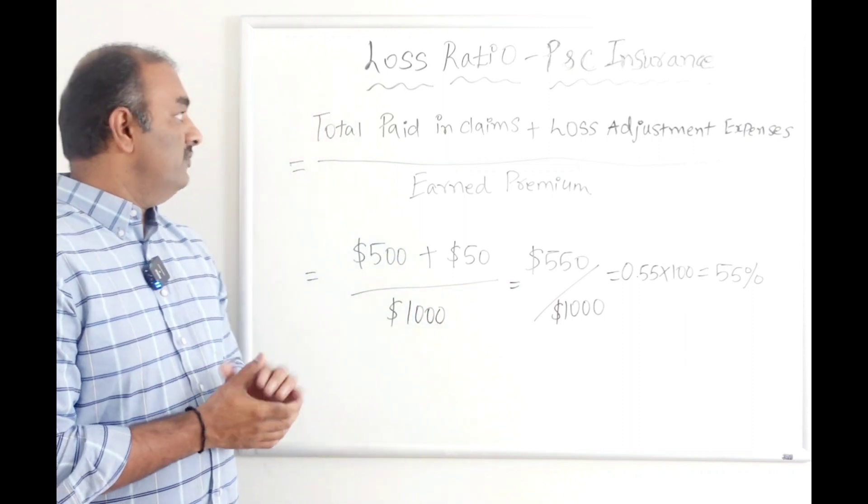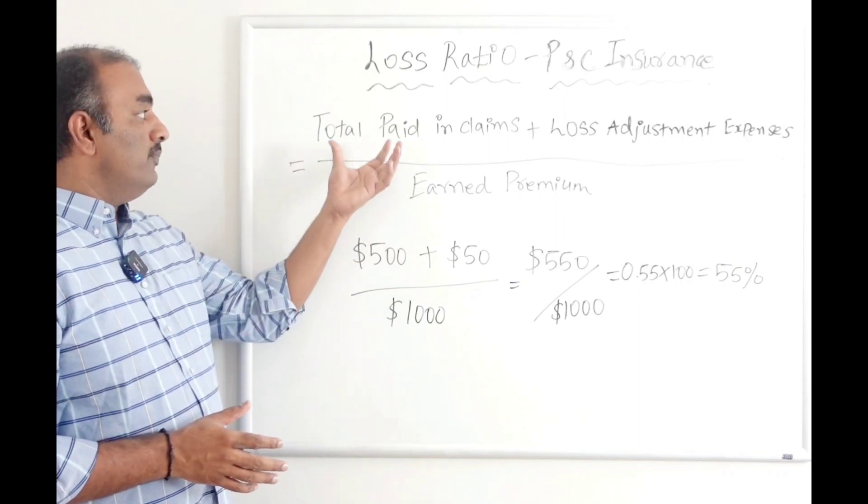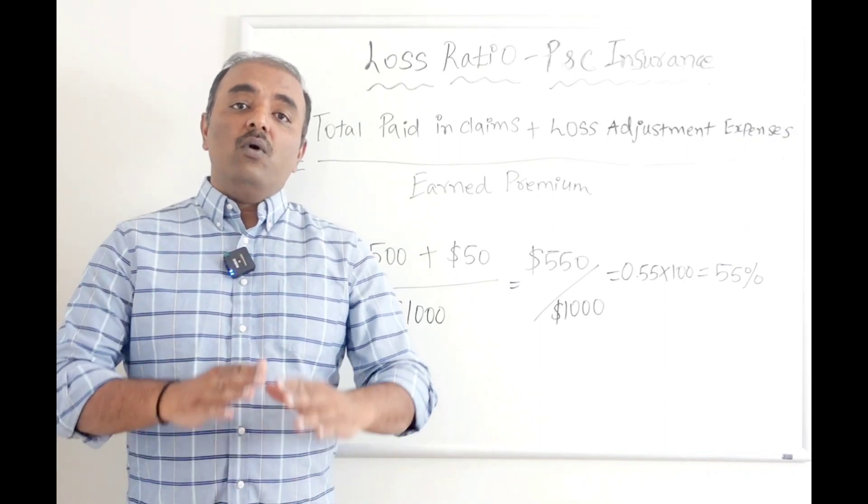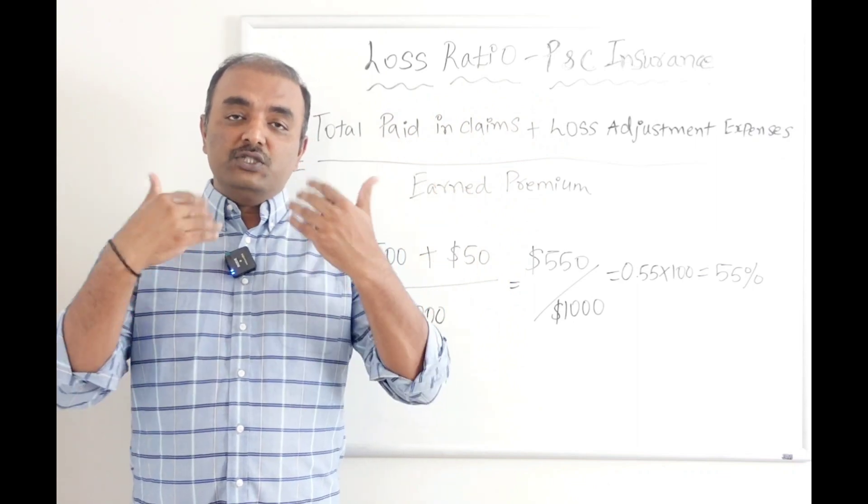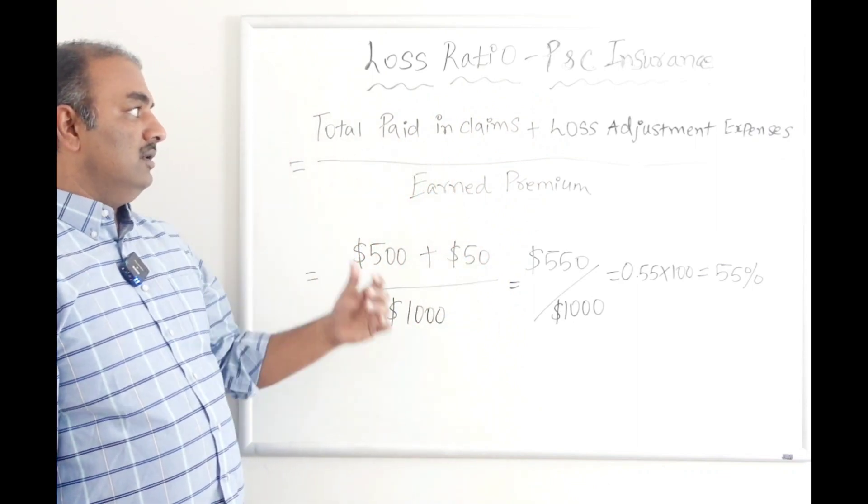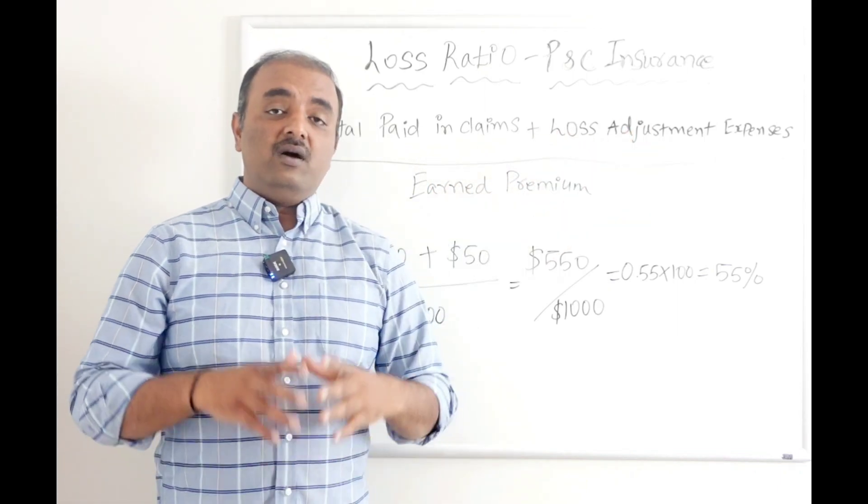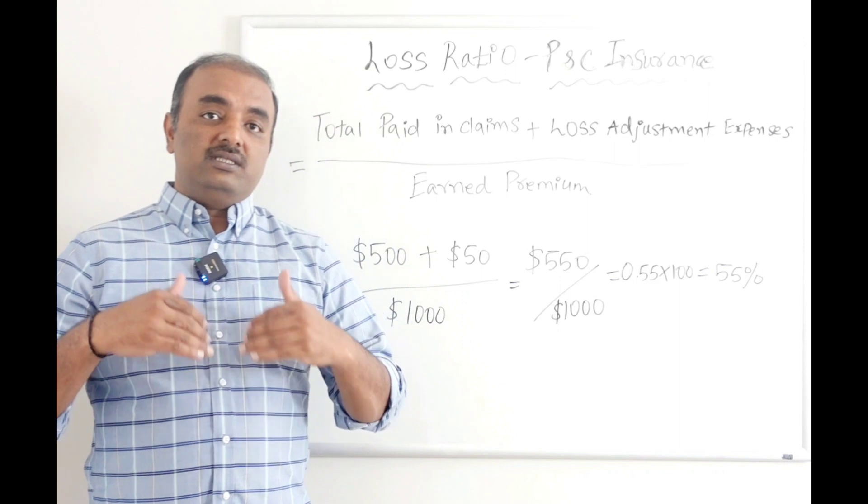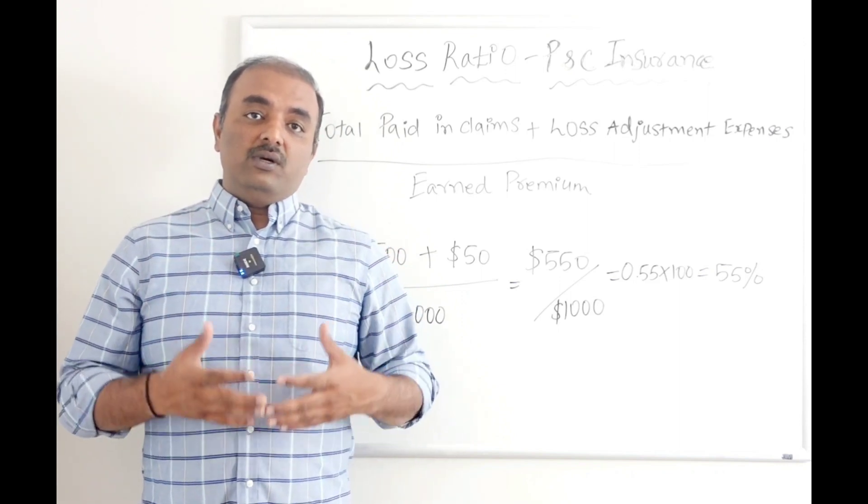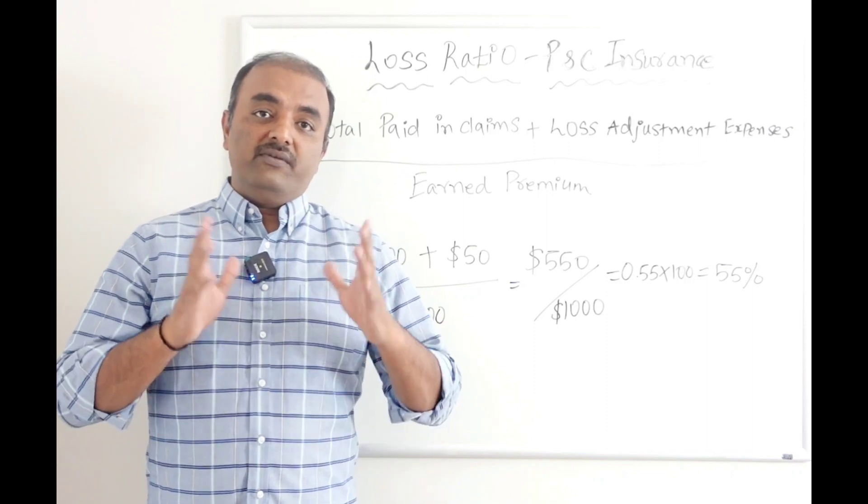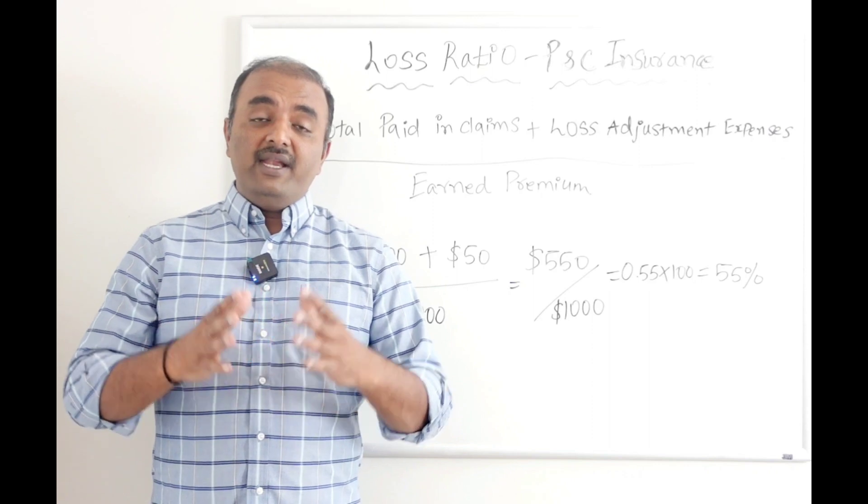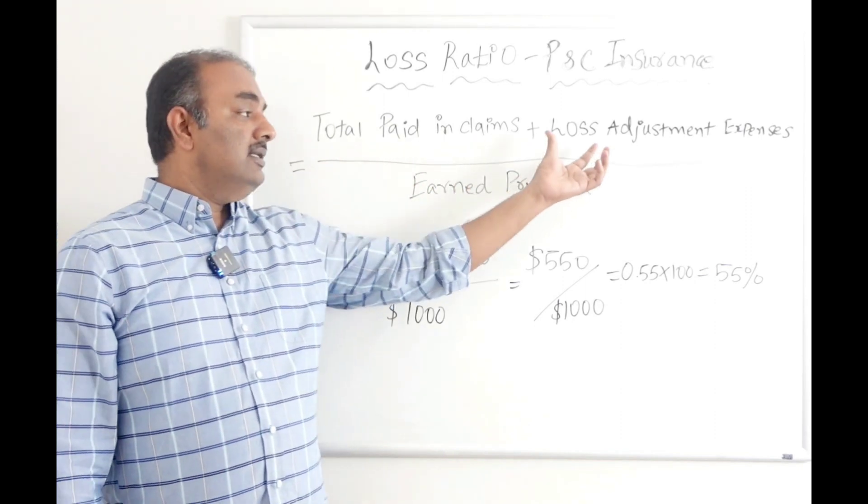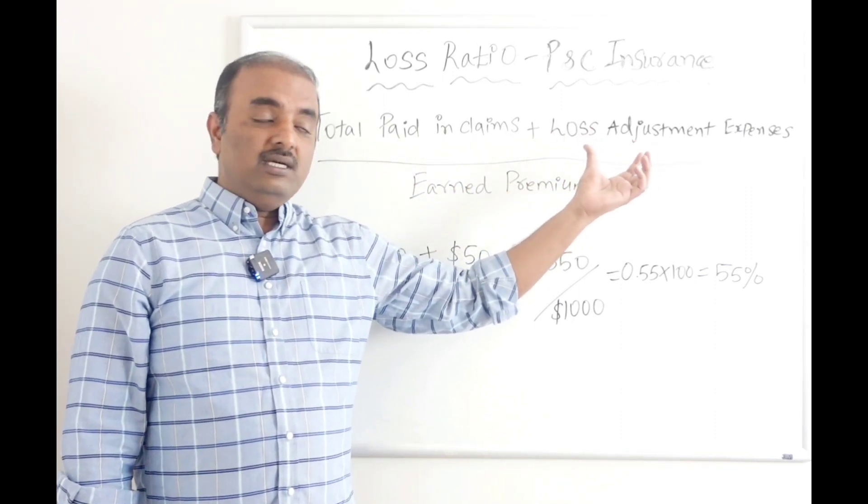The way we calculate loss ratio is the total paid amount in claims for a particular year. Say if I have an insurance company ABC Insurance Company, what is the overall amount that they have paid in a particular year to the insured or claimants? That is taken into account plus any loss adjustment expenses. When I say loss adjustment expenses, any expenses specific to claims processing—like if you want to process your claim, the amount that you pay to your adjuster. Adjusters are the ones who go to the accident location and review the claim, or if there are any attorneys involved with the specific claim. Any claims-specific expenses, so you sum up the total amount that we paid in claims plus any expenses specific to the claims processing, and then divide that by earned premium.